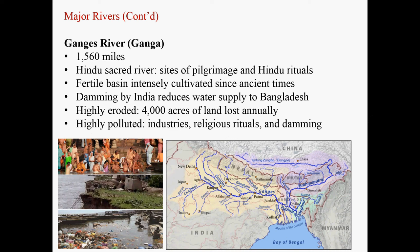The Ganges Valley is highly eroded because of long-time occupation and agriculture, and also because of frequent flooding in the river valley. Annually, approximately 4,000 acres of land are lost to erosion. The Ganges River is also very polluted — you have all kinds of industries and religious rituals throwing things into the river. Damming does not help either: damming the upper reaches reduces water supply to the lower reaches, which aggravates the pollution problems.